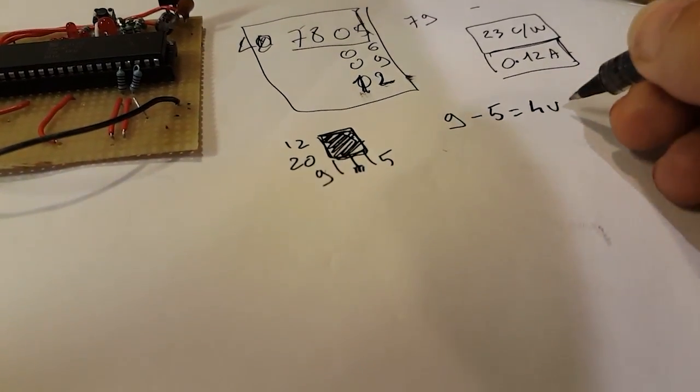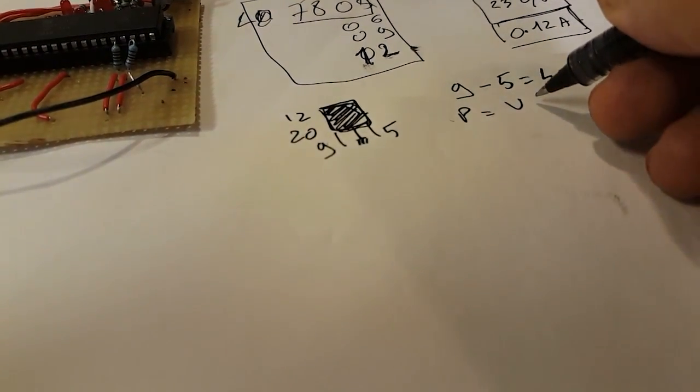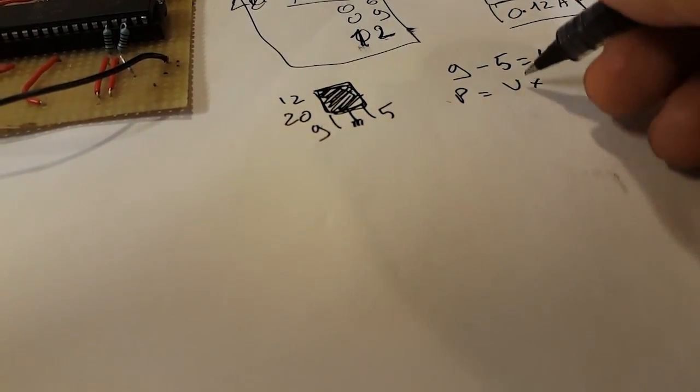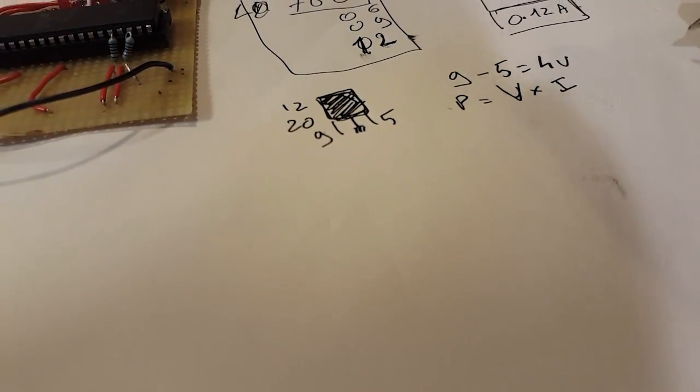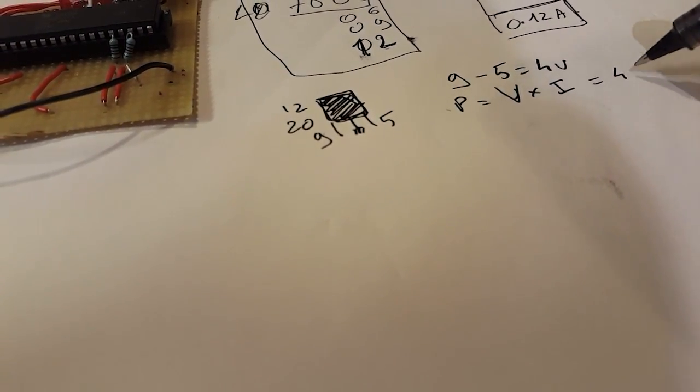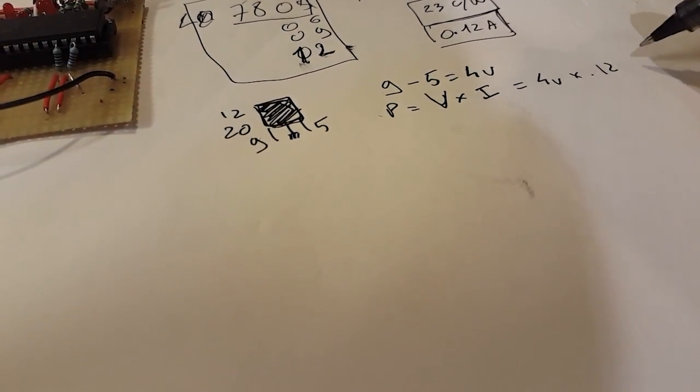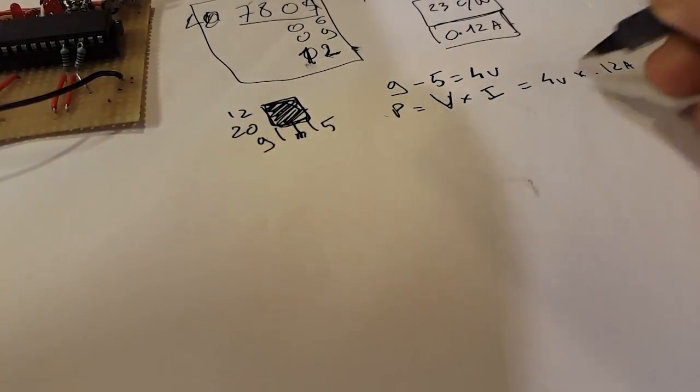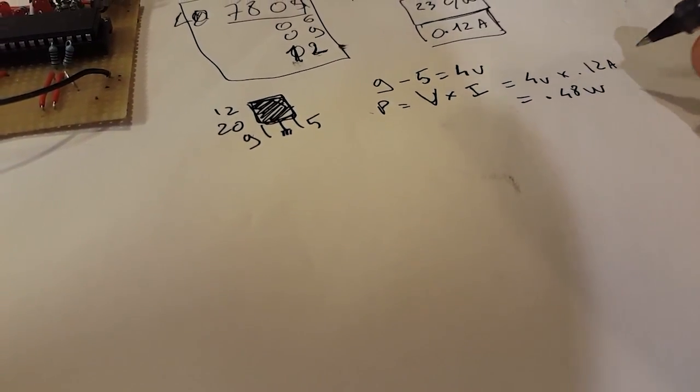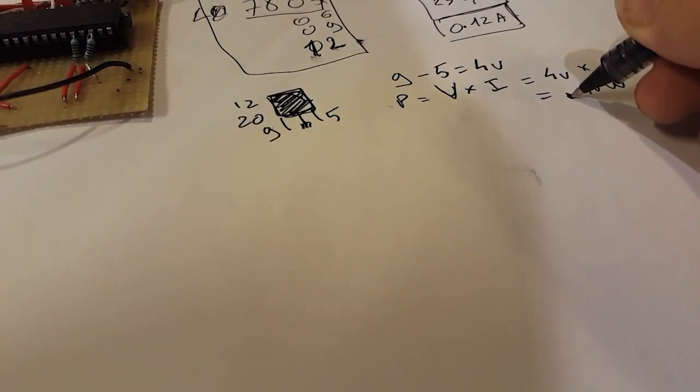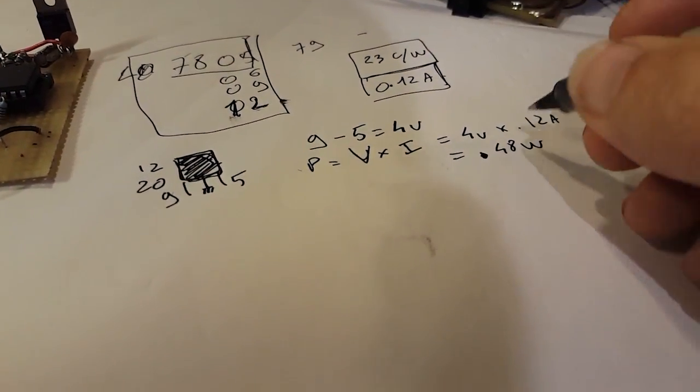From there we can calculate the power, which is the voltage drop times the current consumption. In this case we have 4 volts by 0.12 amps, and we get 0.48 watts. It doesn't look like a lot, but let's see how many degrees Celsius we're actually getting from that.